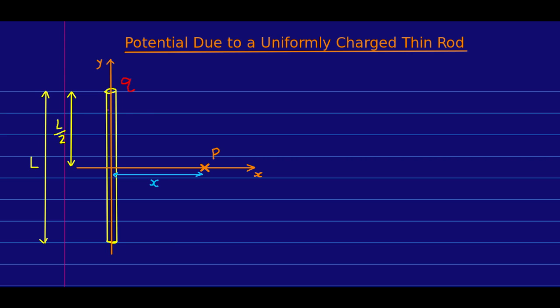But this is going to be a little bit simpler than it was to find the field at a point P due to this rod, because unlike the field, the potential is a nice, simple scalar function. So, just as we did before,